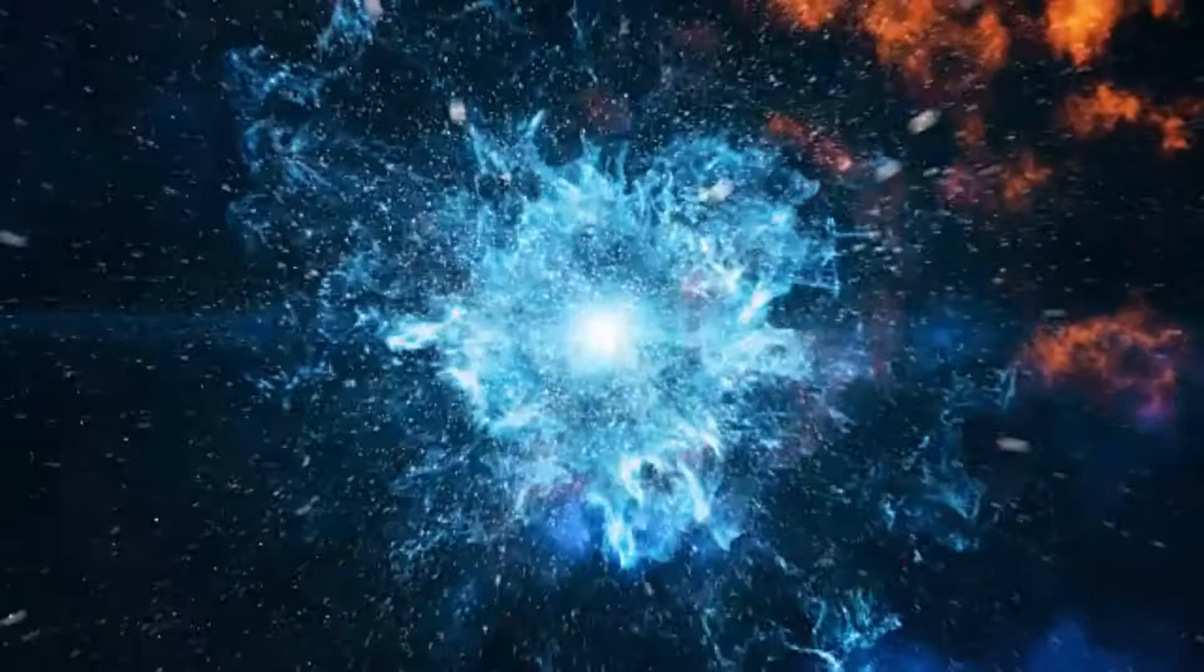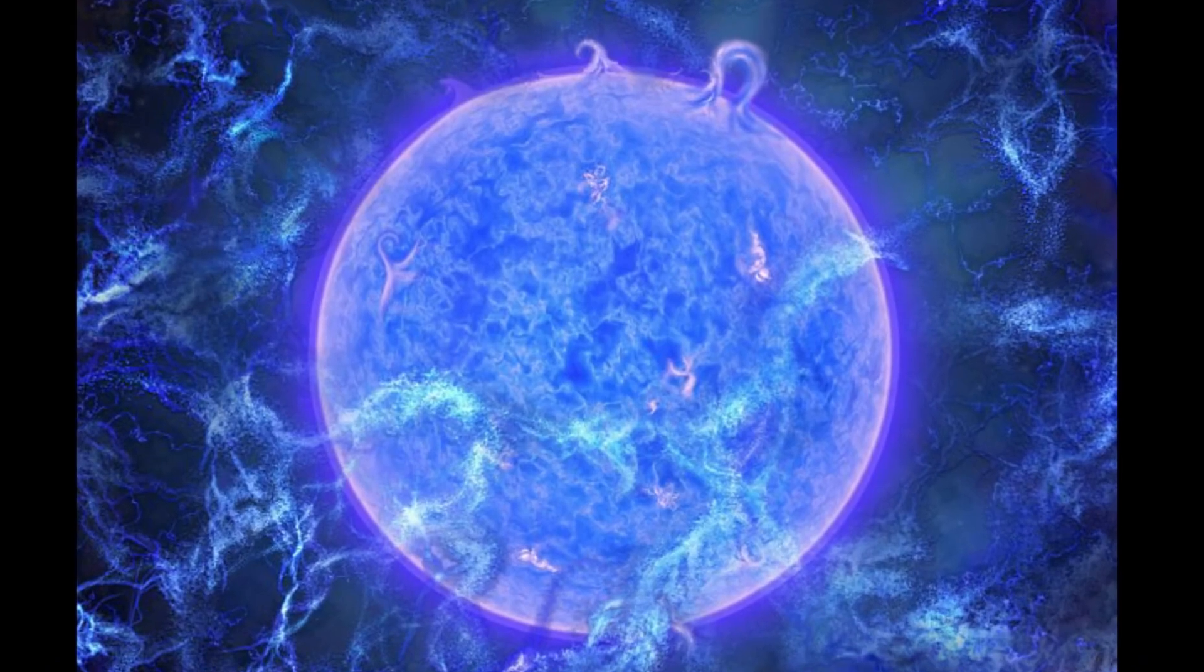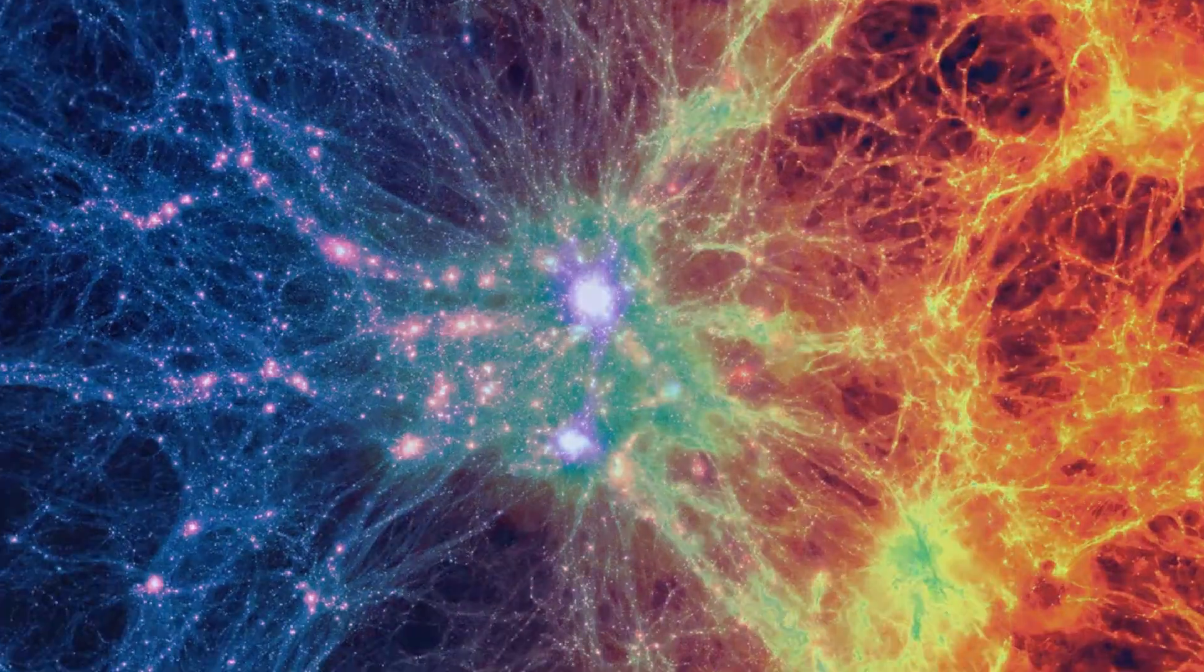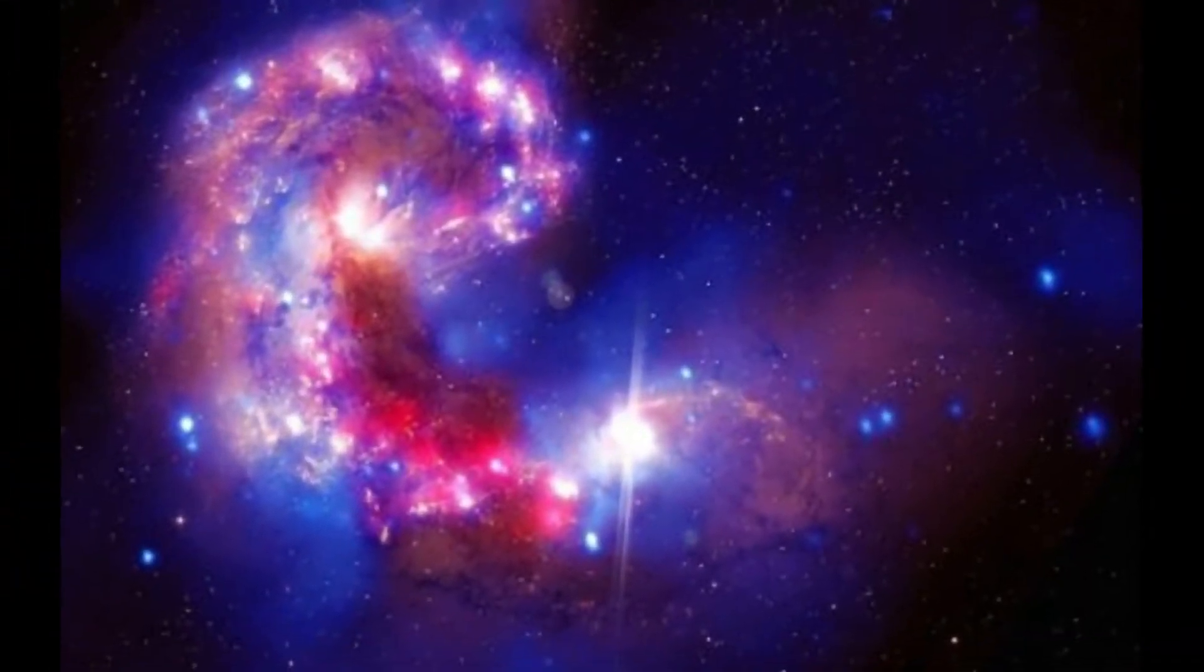Atoms were created after the Big Bang 13.7 billion years ago. As the hot, dense new universe cooled, conditions became suitable for quarks and electrons to form. Quarks came together to form protons and neutrons, and these particles combined into nuclei. This all took place within the first few minutes of the universe's existence.